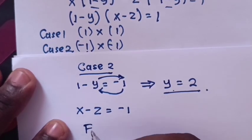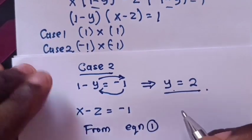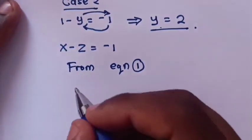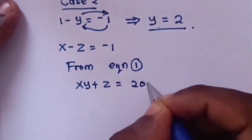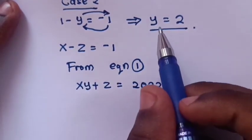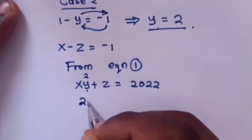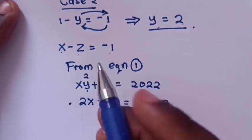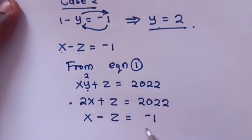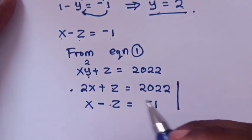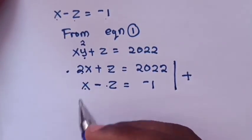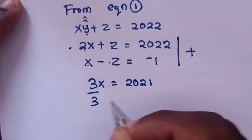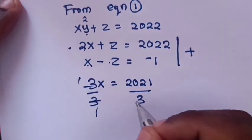To find x and z, from equation 1: xy + z = 2022. Substituting y = 2 gives 2x + z = 2022. We solve this simultaneously with x - z = -1 by elimination. Adding the two equations: z - z = 0, so 2x + x = 3x = 2022 - 1 = 2021.